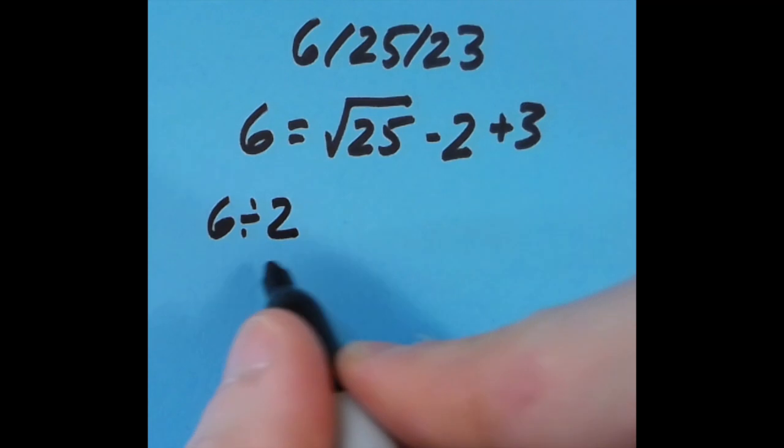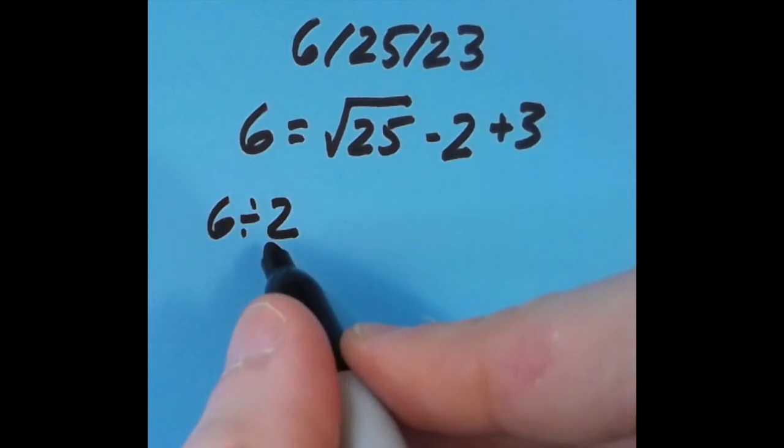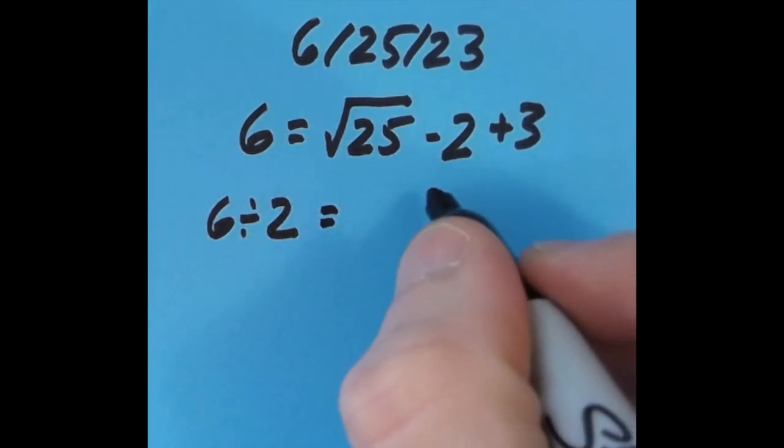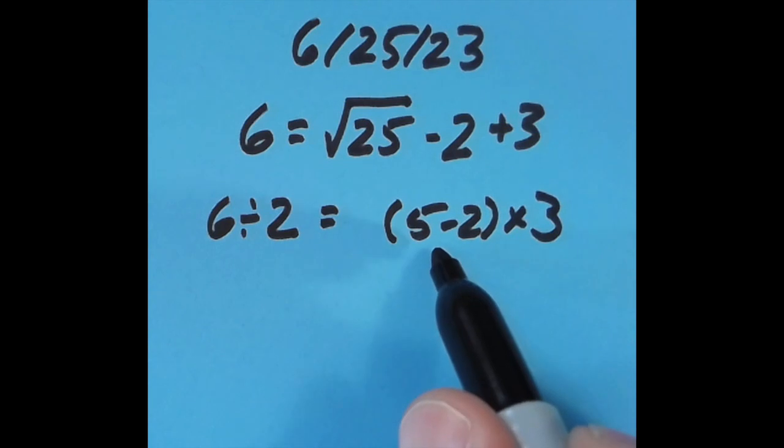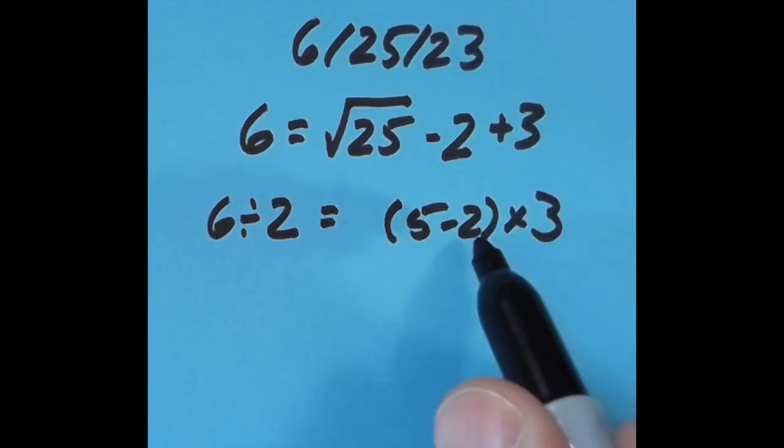With the equal sign a spot to the right, I did 6 divided by 2 to get 3. And over here I'm going to do 5 minus 2 times 3. I want to do the subtraction before I multiply, so I put it in parentheses.